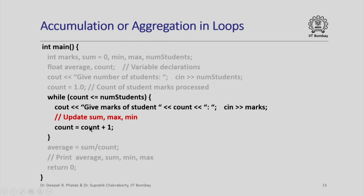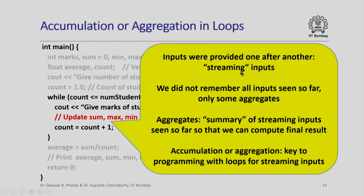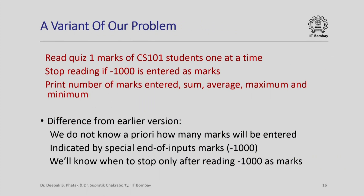Inside this loop we are reading marks for each student one at a time — this is also called streaming inputs. The important point is that we do not remember all inputs seen so far; we only remember some aggregates: sum, max, and min. These aggregates are a summary of the streaming inputs such that we can compute the final result without storing all actual values. Accumulation or aggregation is key to programming with loops for streaming inputs.